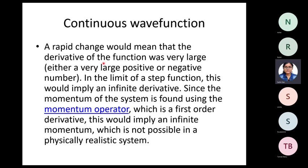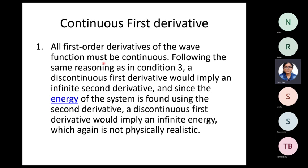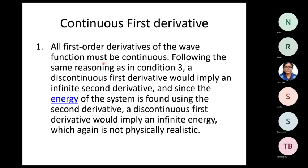You need a continuous wave function to ensure the first-order derivative is also continuous. If the first-order derivative is discontinuous, taking the second-order derivative of the wave function will yield an infinite value. The second-order derivative of the wave function is directly related to the energy of the system, so an infinite second-order derivative implies infinite energy, which is also not physically realistic.